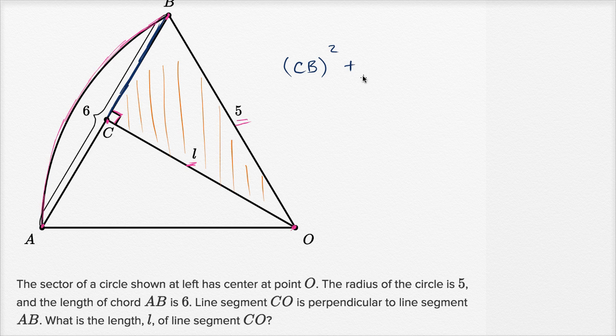plus L squared is going to be equal to the hypotenuse squared, is going to be equal to 25. But we don't exactly know the length of segment CB just yet. It's tempting to say that it's three, it looks like it's half of the six, but we don't know that for sure just yet.